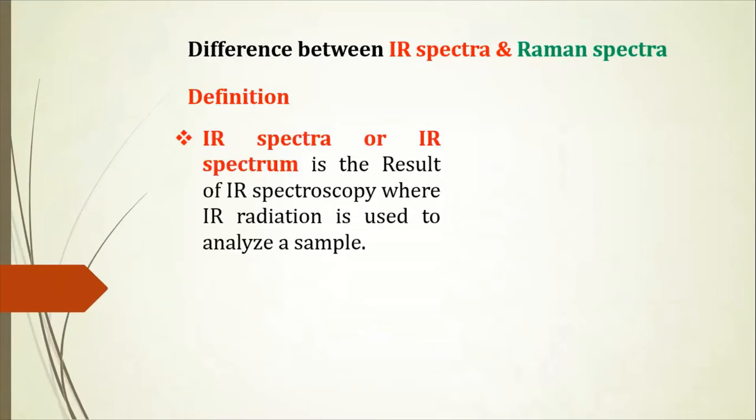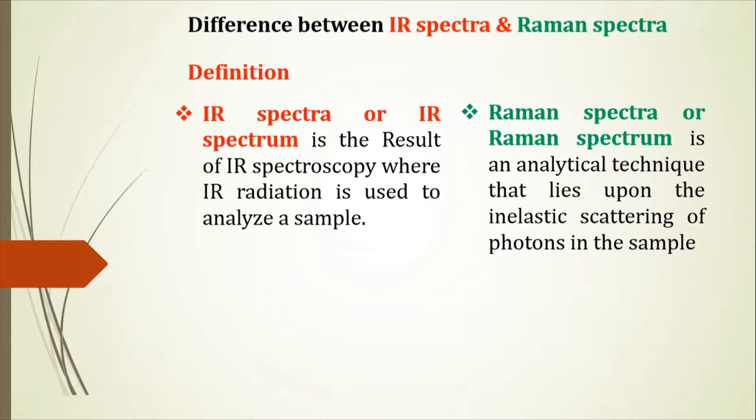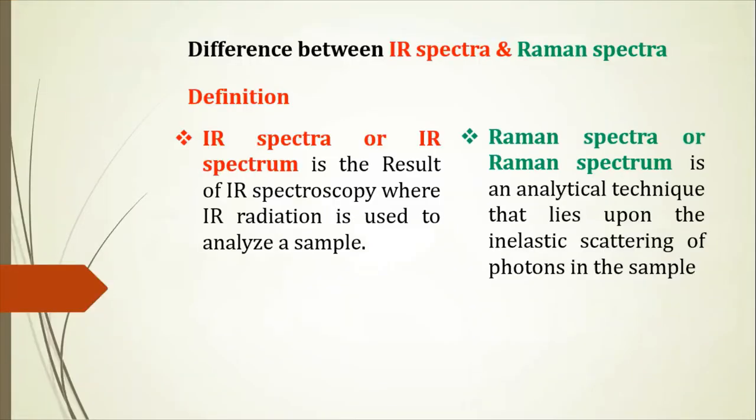First, definition. IR spectra or IR spectrum is the result of infrared spectroscopy where IR radiation is used to analyze the sample, while Raman spectra or Raman spectrum is an analytical technique that lies upon the inelastic scattering of photons in the sample.